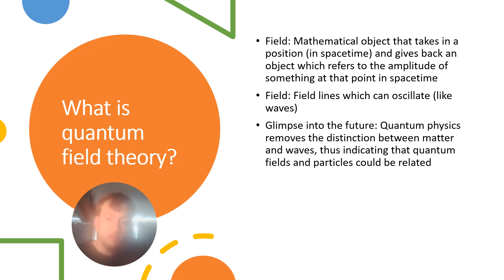So with quantum physics, we remove the distinction between matter, in terms of matter being made up of particles, and waves, and we consider wave-particle duality, where matter can behave like waves and waves can behave like matter. And since fields can act like waves, they can oscillate like waves, this indicates that quantum fields and particles could also be interchangeable to an extent.